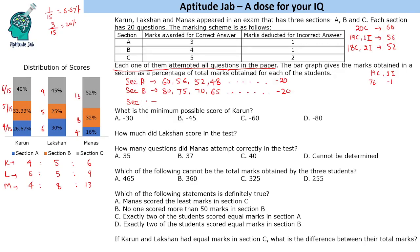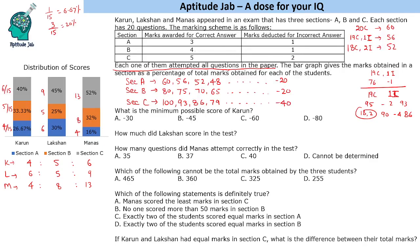For Section C, each question is worth 5 marks, so maximum is 100. With 19 correct and 1 incorrect: 95 minus 2 = 93. With 18 correct and 2 incorrect: 90 minus 4 = 86. For every incorrect answer, there is a loss of 7 marks. So Section C scores go: 100, 93, 86, 79, ... with minimum at minus 40 (all 20 incorrect).